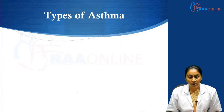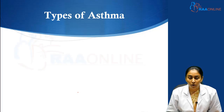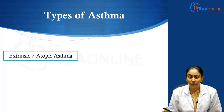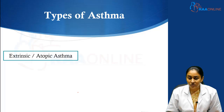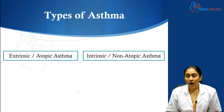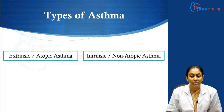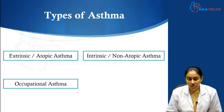Now let us look at the various types of asthma — the various phenotypes. Broadly there are four important types. Atopic asthma, also known as extrinsic asthma, constitutes the broad bulk of asthmatics. Then you have non-atopic or intrinsic asthma, which is usually late onset and adult onset disease without any allergic manifestations.